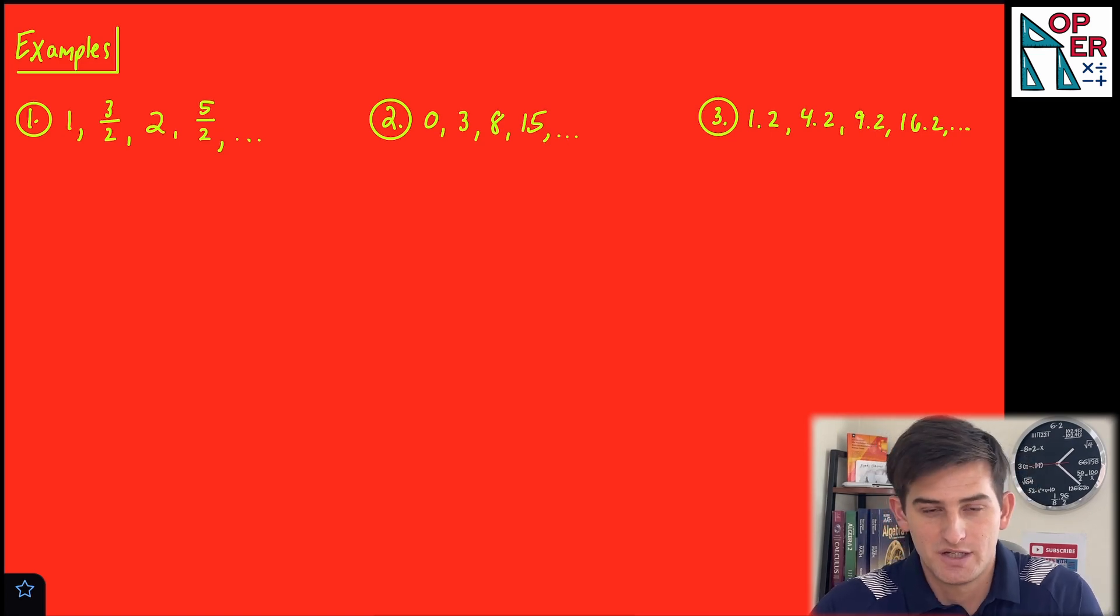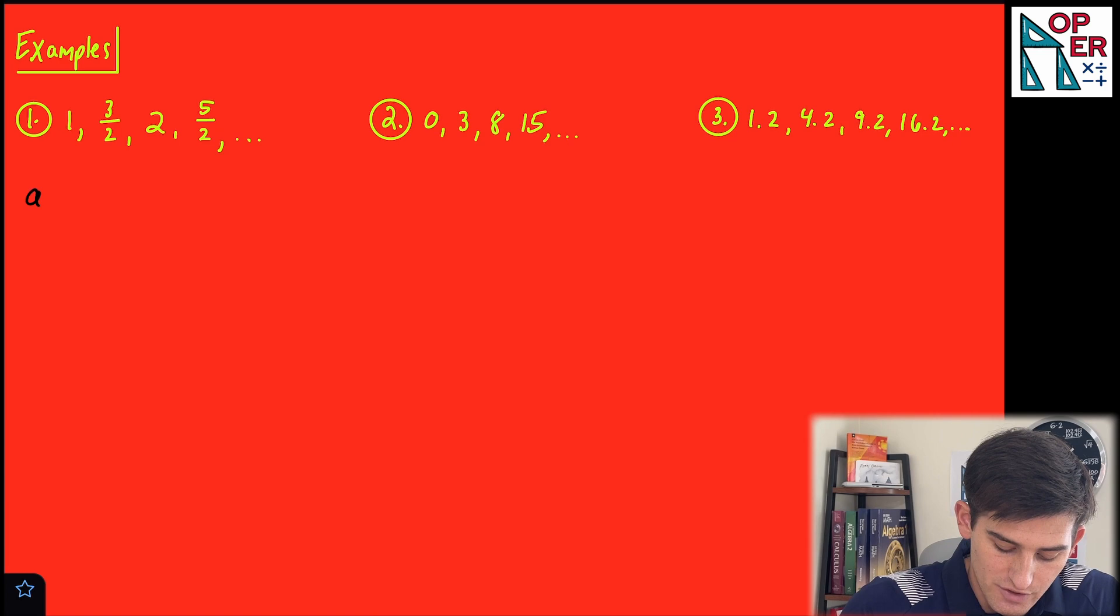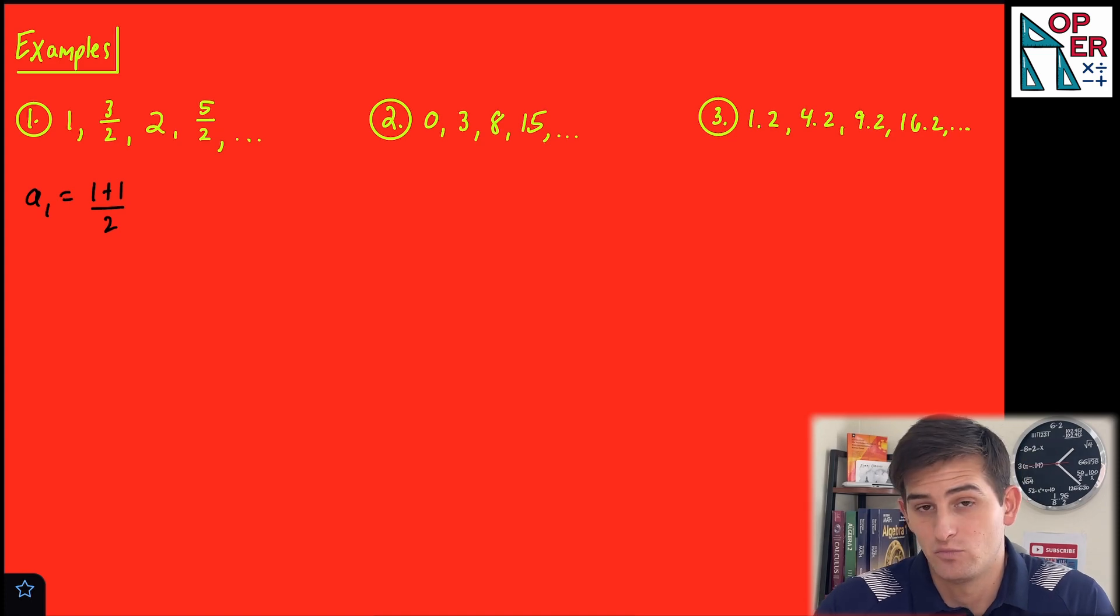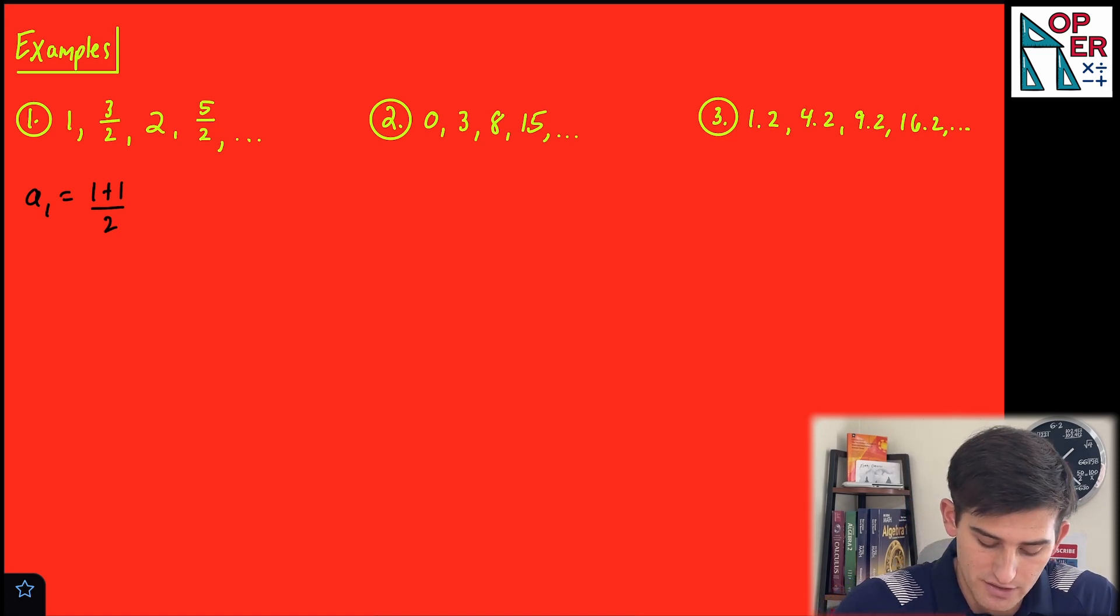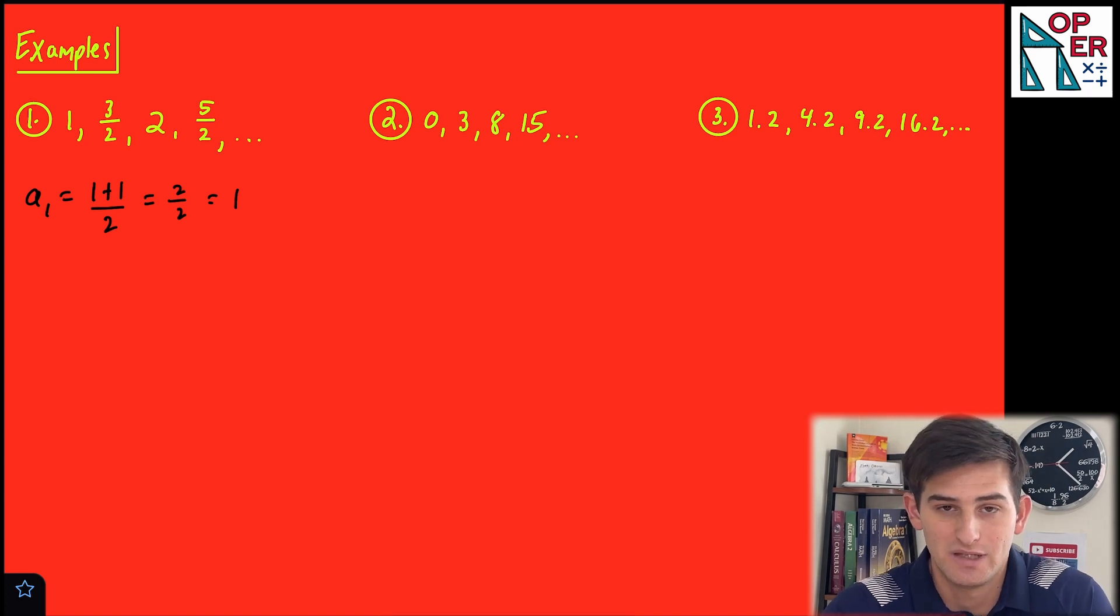So we think about our terms here. Let's try and rewrite our first term. So like a sub one, and let's write it as one plus one over two, right? Because one plus one would be two. So this is still two over two, which would be equal to one, which is what our first term is.